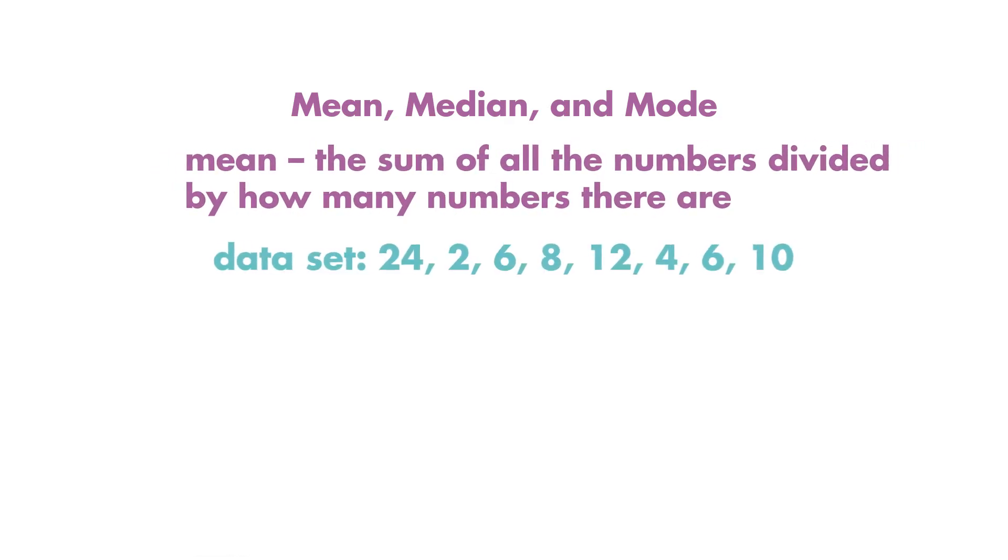To find the mean of this set of numbers, which is sometimes called the average, we add the numbers together and then divide by how many numbers are in the set. The mean of this set of numbers is 9.